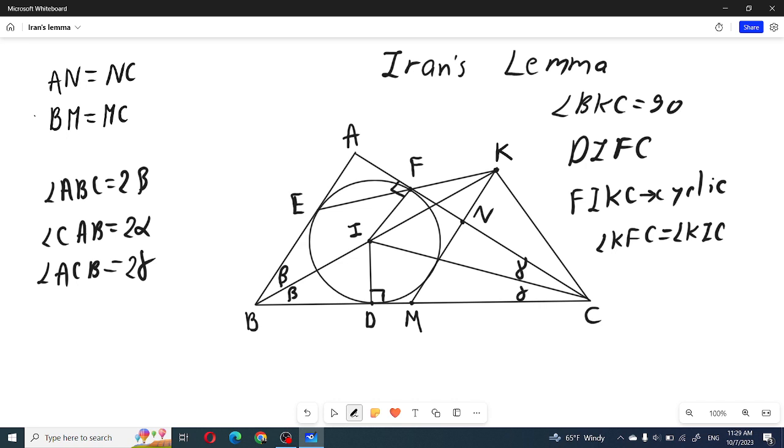This must be isosceles triangle AEF, and angle FAE must be (180 - 2α)/2.